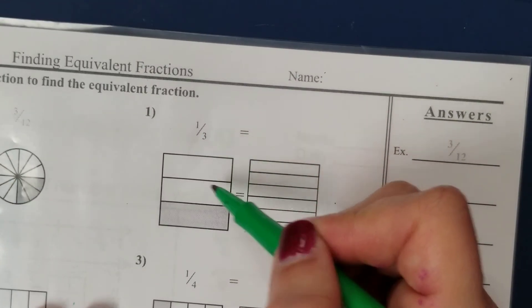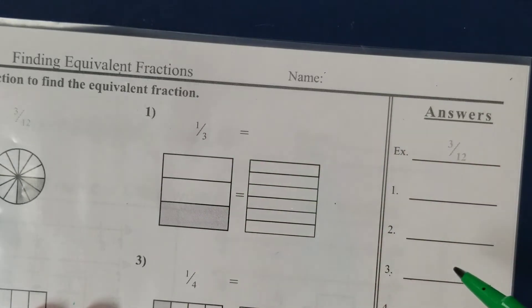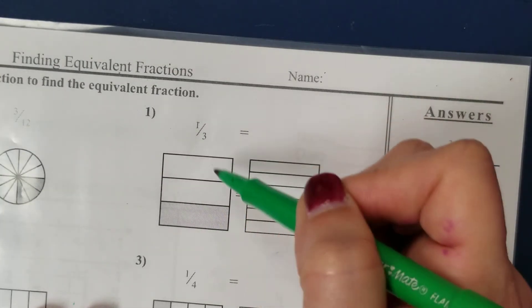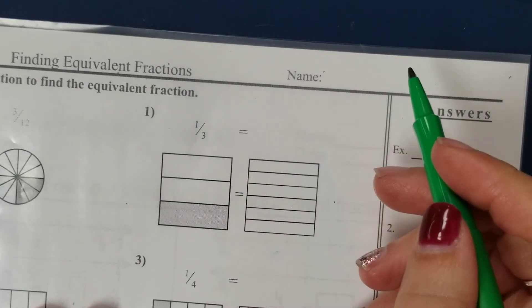Here they have a rectangle. It's got one, two, three parts, so there's a three in the denominator. One of those parts is shaded, so one of the three parts is shaded for this rectangle. One-third is represented.